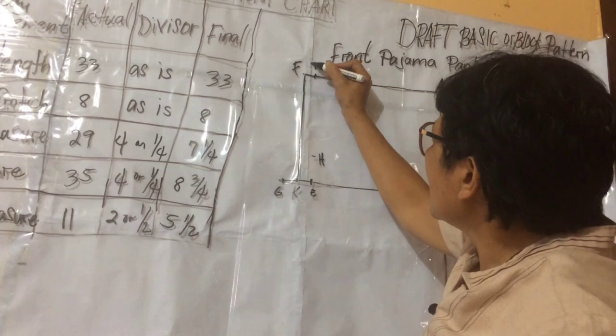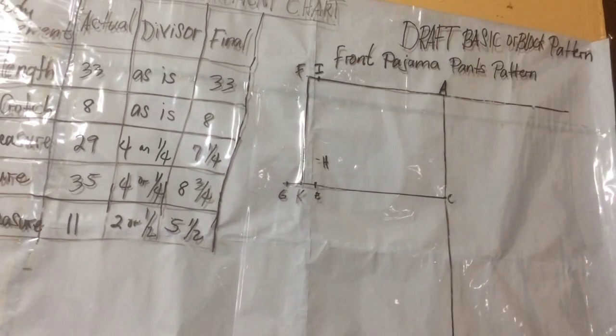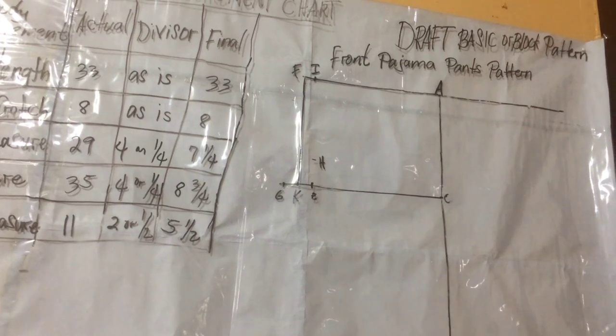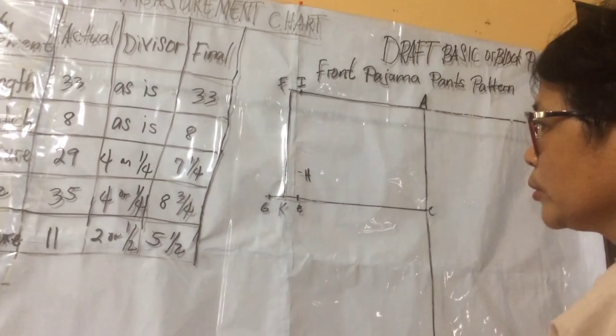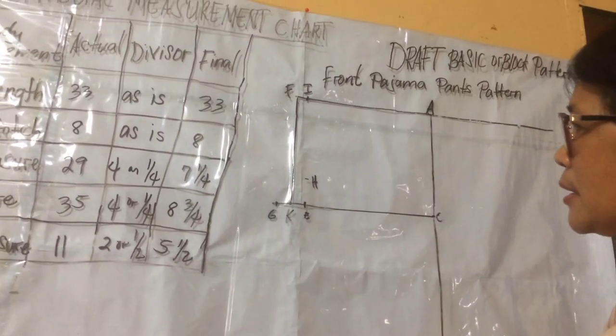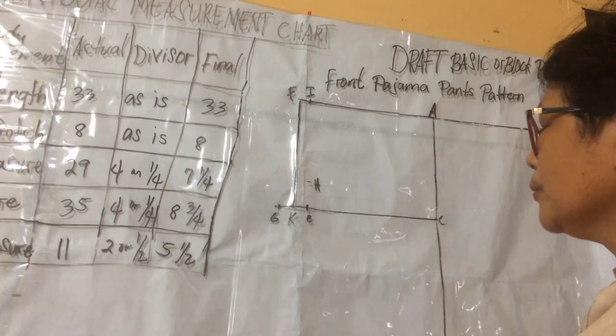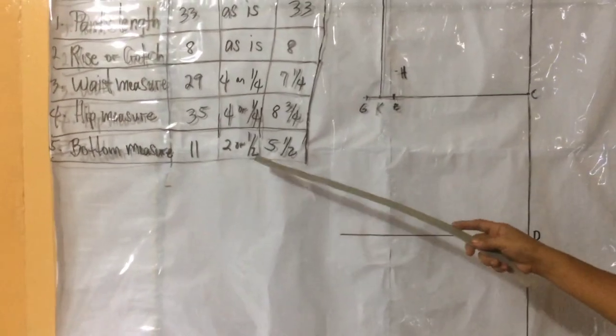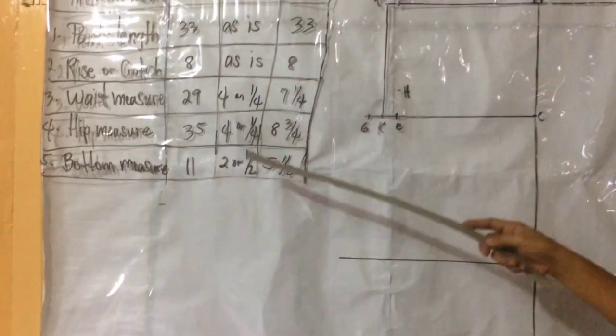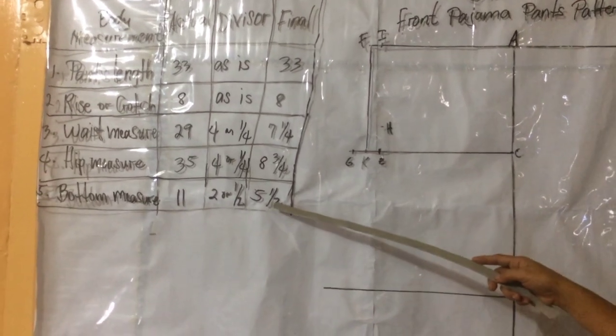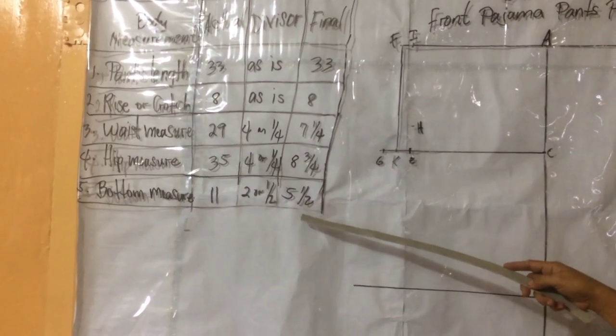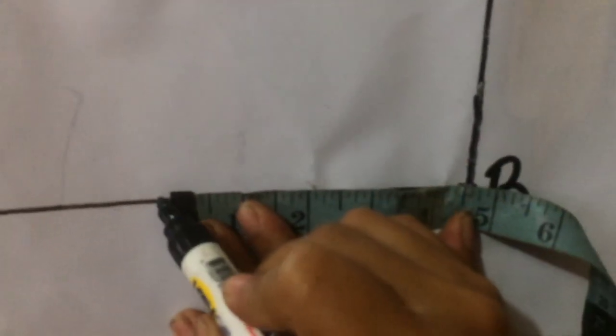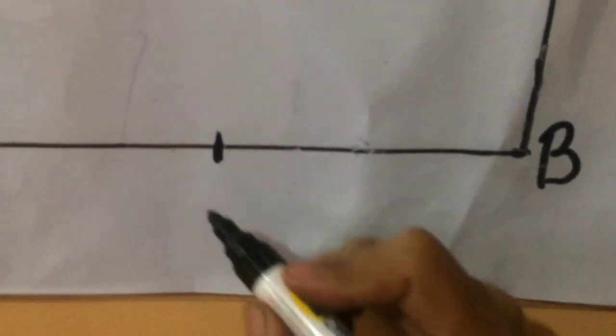Mark I. From point B to the left, is one half final bottom. From point B to the left, measure one half final bottom measure. Five and one half minus one, four and one half. From point B, measure four and one half. Mark G.